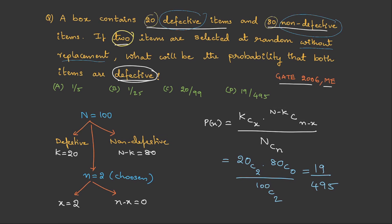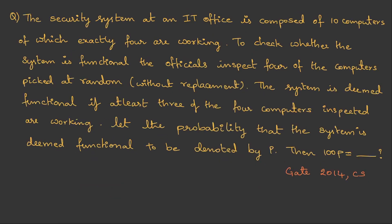Now, let us do one more question. Here is the big one. This is GATE 2014 from computer science. The security system at an IT office is composed of 10 computers of which exactly 4 are working.